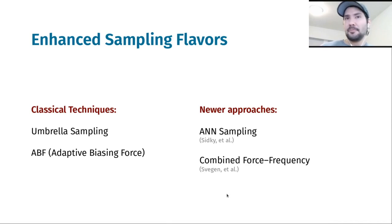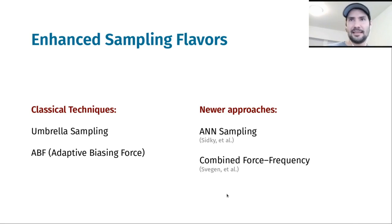There are many enhanced sampling algorithms. Some of the classic ones, probably already known by some, are umbrella sampling or adaptive biasing force. But there are newer developments which build upon the classic ones and use, for example, artificial neural networks to get smooth approximations of the free energy of a system.